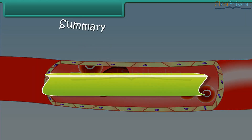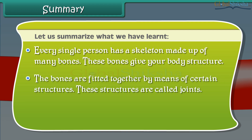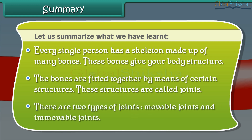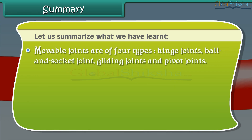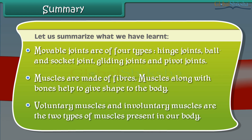Summary: Every single person has a skeleton made up of many bones. These bones give our body structure. The bones are fitted together by means of certain structures called joints. There are two types of joints: moveable and immovable joints. Moveable joints are of four types: hinge joints, ball and socket joints, gliding joints, and pivot joints. Muscles are made of fibers. Muscles, along with bones, help to give shape to the body. Voluntary muscles and involuntary muscles are the two types of muscles present in our body.